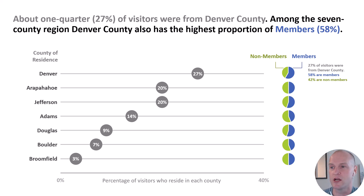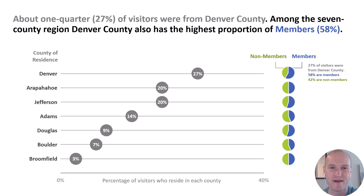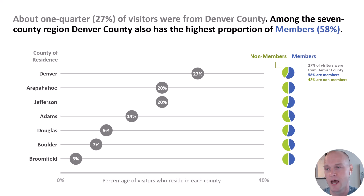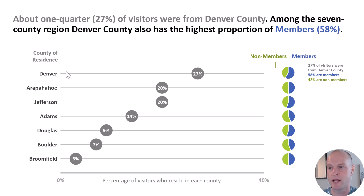The first slide we have here is showing the percentage of members at a zoo — maybe Denver Zoo. This is actually fake data, but I used to work for Denver Zoo, so these represent a seven-county region that the zoo receives tax funding from. I wanted to show the percentage of our members from each of those seven counties, which I did here in this dot plot — kind of a Cleveland dot plot.